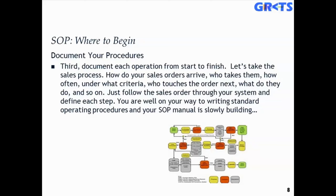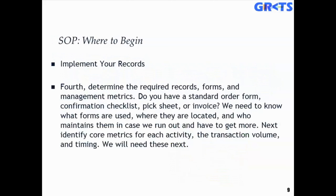You're on the way to writing a procedure in your SOP manual — this is a slowly building process, a construction project of your SOP development, implementation, and deployment program. Fourth would be your records, other artifacts or exhibits to be created — records, forms, management metrics, and other items. For example, do you have a standard order form, confirmation checklist, a peg sheet, or invoice? We need to know what forms are used. We're also generating artifacts and exhibits to confirm and authenticate that the procedure is actually being followed — incontrovertible evidence that records are in alignment with the procedure as written. Identify the core metrics for each activity, the transaction volume and timing.